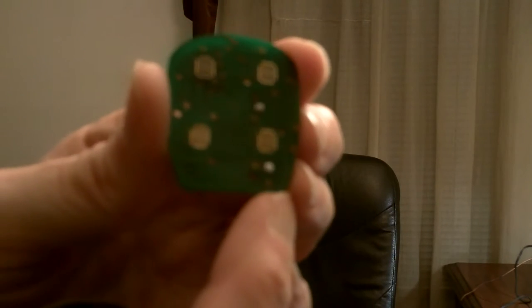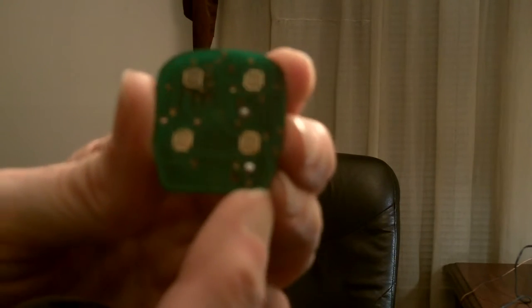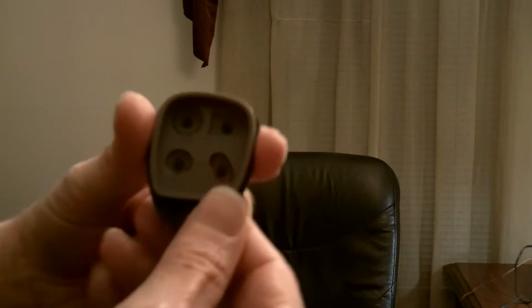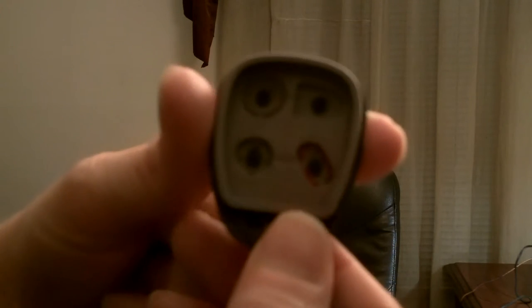It consists of a PC board and the push-button part. Now the push-button part has four black pads that make contact with the traces on the PC board. So I'll see if I can get a close-up. Those are the four traces they make contact with these four buttons.